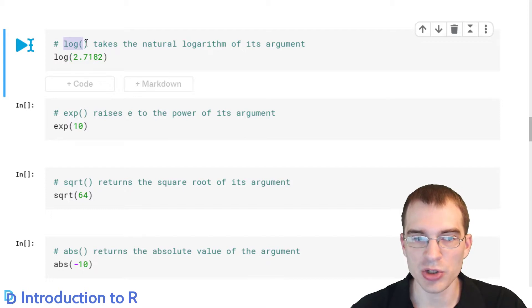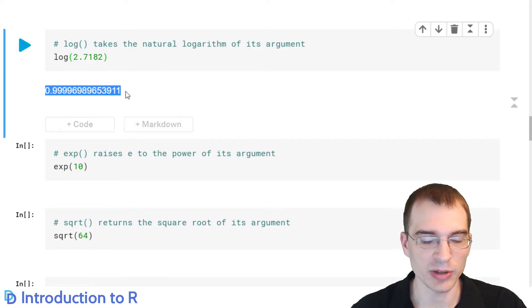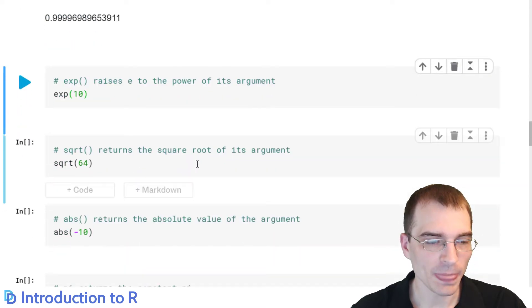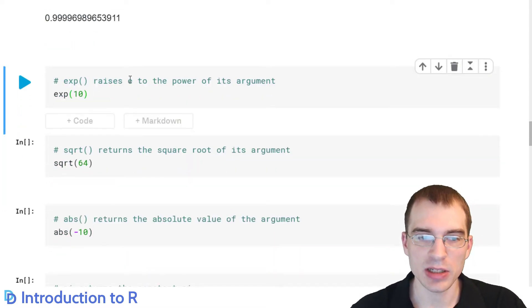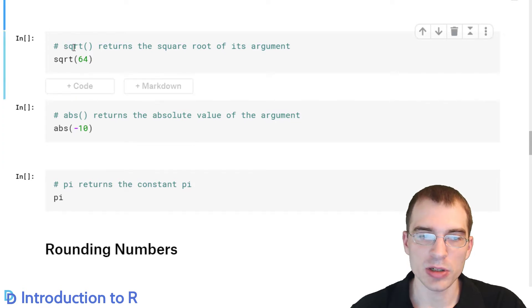The log function will take the natural logarithm of the argument. So if we run log on 2.7183, which is close to the value e, this should spit out something very close to one. The exp function raises e to the power of its argument. The square root function, sqrt, returns the square root of the argument. In this case, we're doing square root 64. That should return 8.